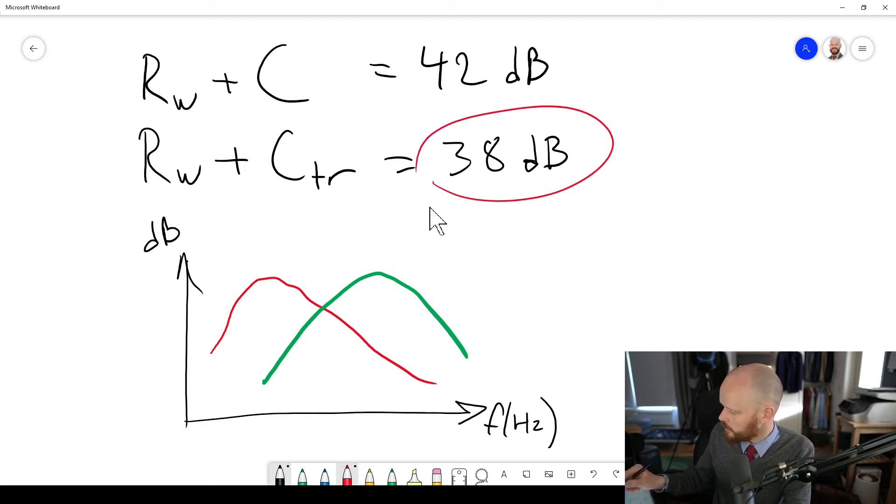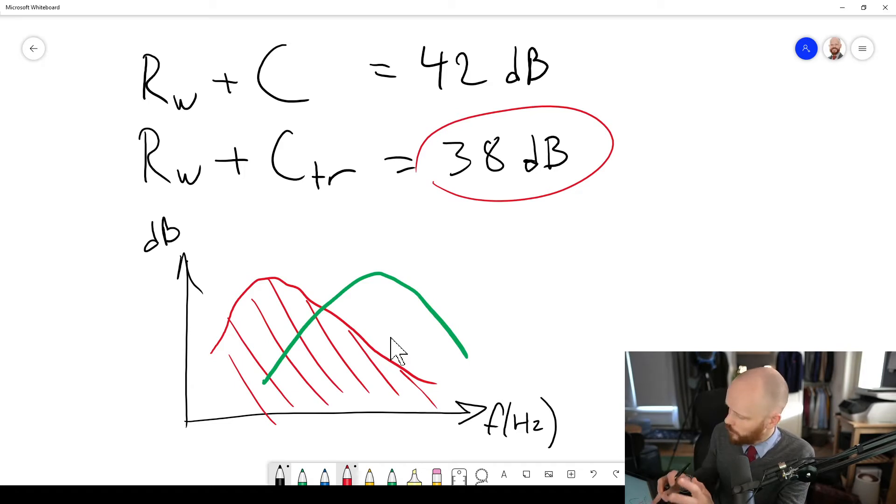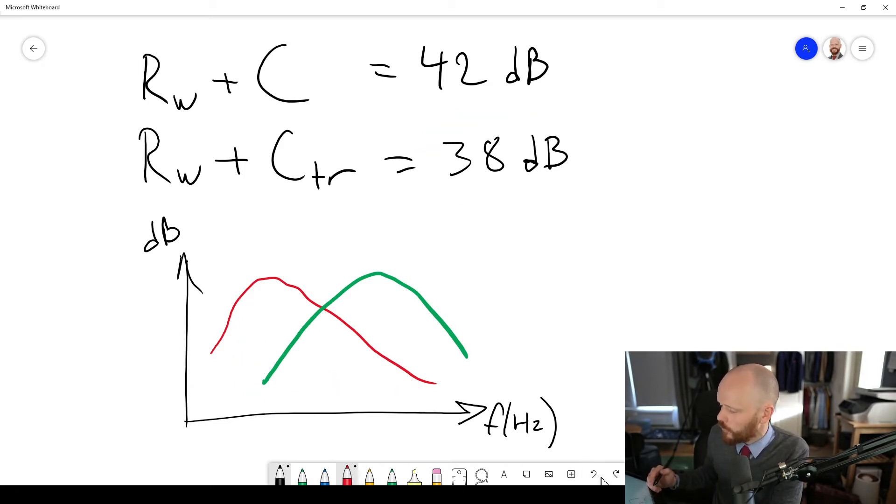Whereas this other one, this is a way of weighting the third octave bands so that they put the emphasis more towards the lower end of the frequency spectrum, which is a good idea if you want to protect yourself against noise from trucks and buses and stuff like that.